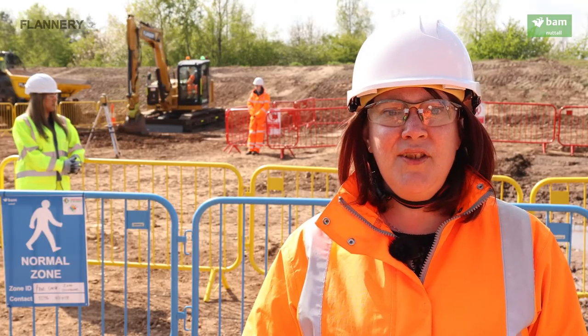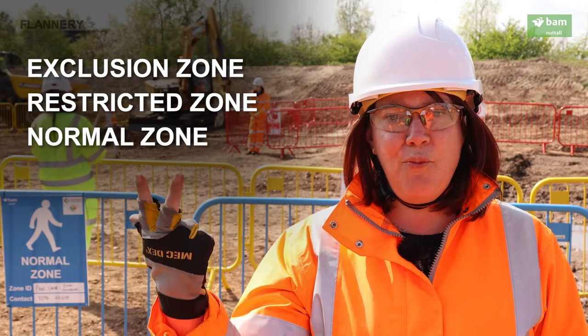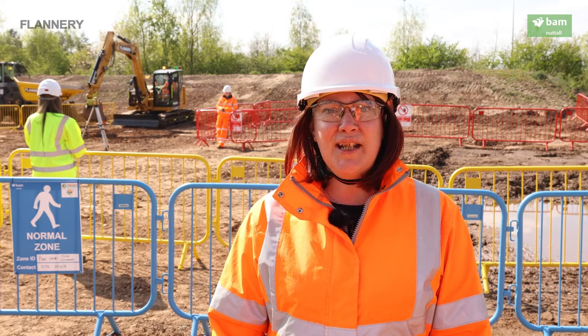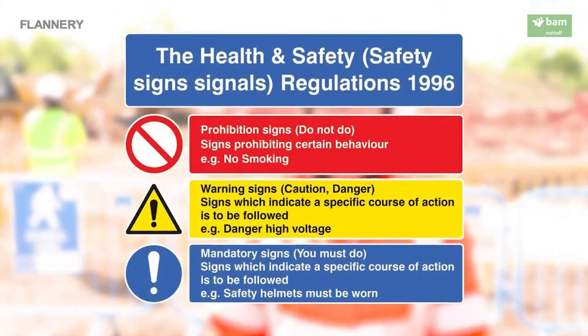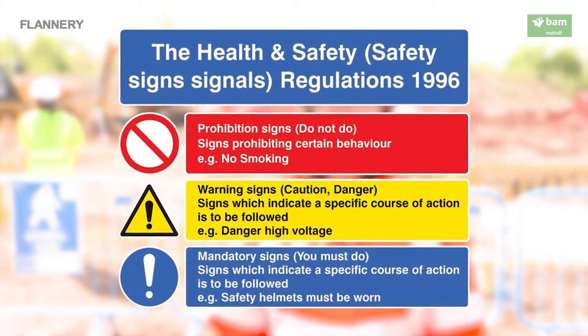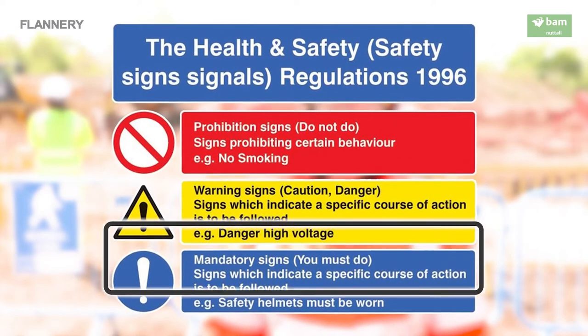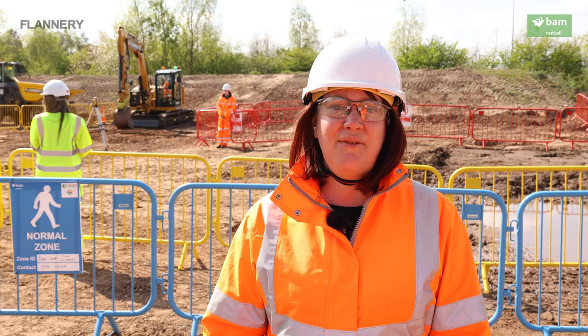There are three main types of zone: exclusion zone, restricted zone, and normal zone. To make the zones instantly recognisable, we have used nationally recognised signage which aligns with the Health and Safety Signs and Signals Regulations 1996 — the principles of prohibition signs, warning signs, and mandatory signs. These help those with either a language barrier or colour vision issues within the workforce to stay safe on site.